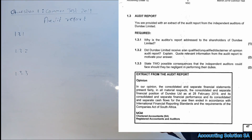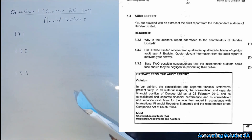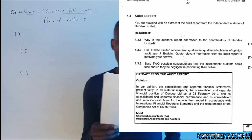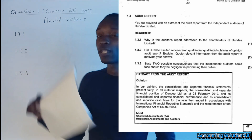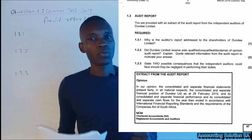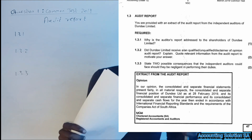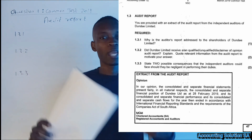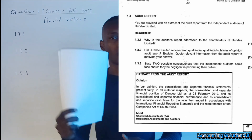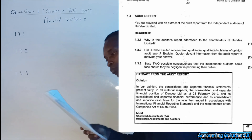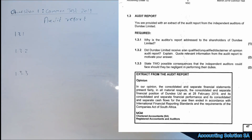Let's check our question paper. It was question 1.3 — they said you are provided with an extract of the audit report from independent auditors of Dundee Limited. The required question 1.3.1 asks: why is the auditor's report addressed to the shareholders of Dundee Limited? This is a theory question and you must not ignore it, because almost 30 to 40% of your question paper is theory.